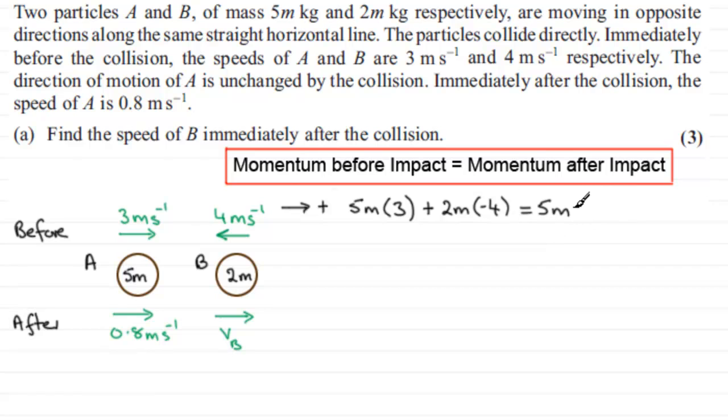To this we add the momentum of B. So its mass is 2m, and we now multiply it by its velocity. Well, it's going to be vB because it acts to the right in the positive sense, so it's 2m vB.